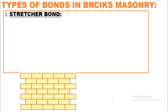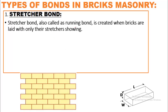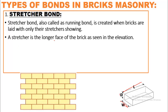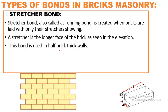The first type is stretcher bond, also called running bond. It is created when bricks are laid with only their stretchers showing — the longer face of the brick as seen in elevation. All bricks are laid with the longer side visible in elevation. This bond is used in half-brick-thick walls, meaning the wall thickness equals the width of the brick — approximately 4.5 inches or 90 mm.